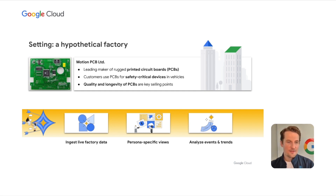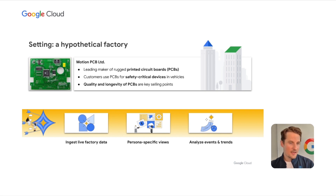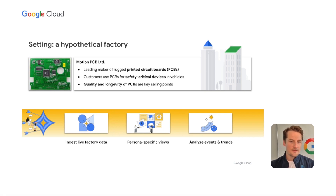The company has three goals in the first phase. One, it wants to ingest live factory data. Two, surface this data in views and dashboards optimized for various user personas. And three, analyze events and trends in that data.